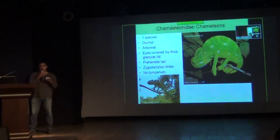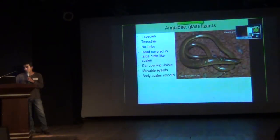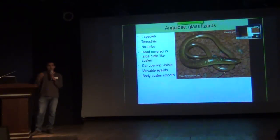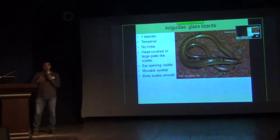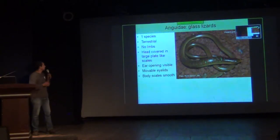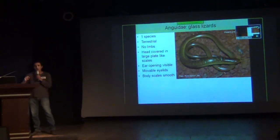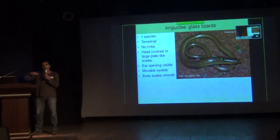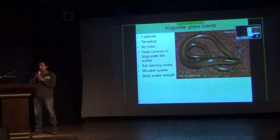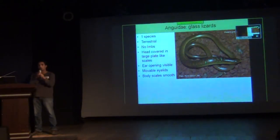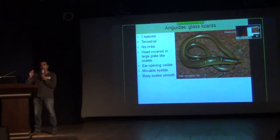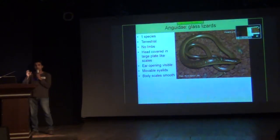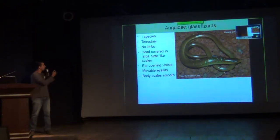We have just one species of Anguidae — glass lizards — found only in northeast India. Dopasia gracilis is limbless and very skink-like in appearance, but the body scales are more squarish and smooth. One of the differences between snakes and this — if you see a limbless lizard, look for the ear opening: snakes don't have ear openings, but these glass lizards do. They can also close their eyes, unlike snakes. These characters help you separate glass lizards from snakes. They also have smooth, shiny, and very colourful body scales.